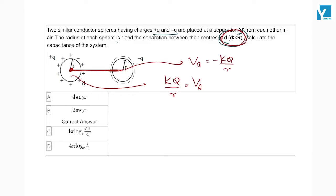The charge will be distributed equally because the size is the same. So what is the change in potential? Va minus VB. This is 2KQ by r.